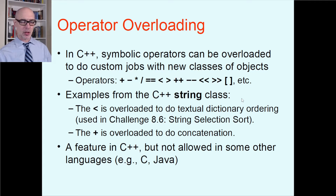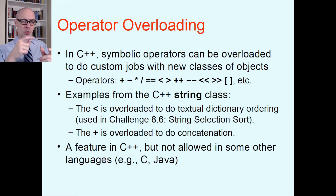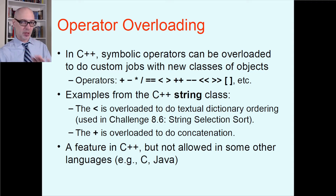A couple of examples we've used from the C++ string class: relational operators like less than and greater than are overloaded to do textual dictionary ordering for strings. Students used this in Programming Challenge 8.6, the string selection sort. If I have string object 1 and string object 2, I can just write string1 less than string2, and it returns true or false based on dictionary order — totally different from comparing integers or floats.